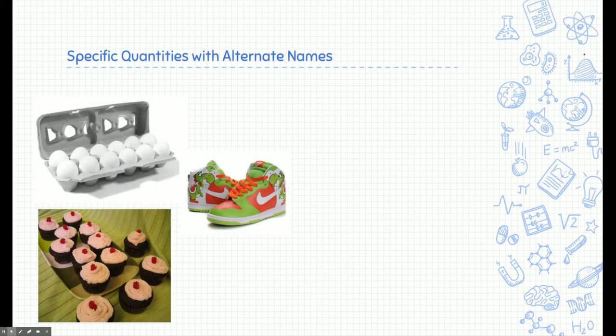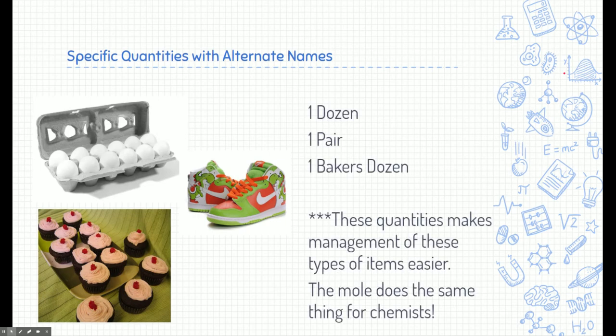So what's the point of a mole or why do we use these things called moles? Well, I want to just show you that we use specific quantities with alternate names elsewhere. Take a look at these three examples here. You're probably familiar with eggs coming in one dozen. Well, a dozen is just a term to simplify a quantity of eggs. And that represents 12. And it doesn't just need to be 12 eggs. It could be 12 people. We know that one dozen is a simplified version of 12 things.